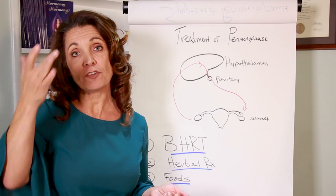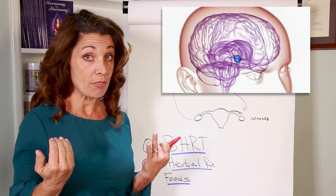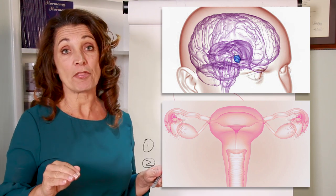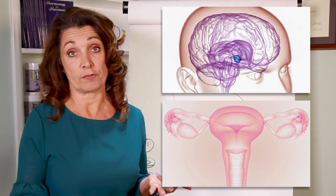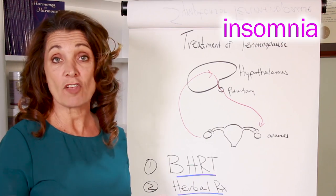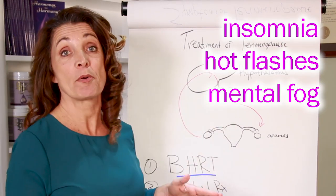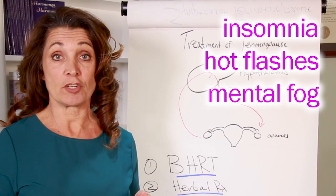Balancing the communication between the master controller, your hypothalamus, and your ovaries. Because when that gets out of balance, it's your hypothalamus that's actually triggering most of your symptoms. The symptoms of insomnia and hot flashes and mental fog is due to the hypothalamus missing estrogen and progesterone.